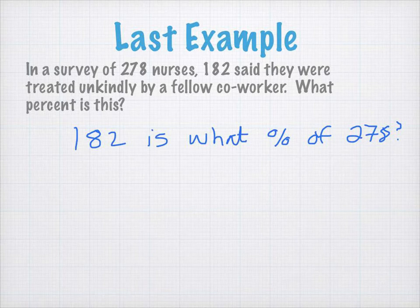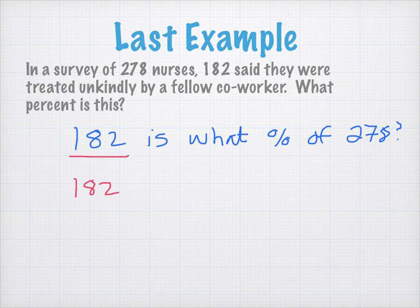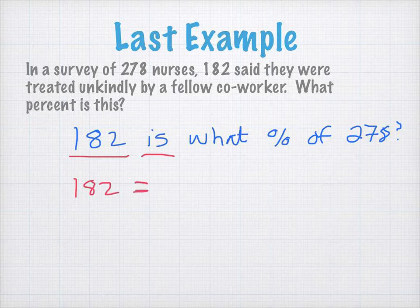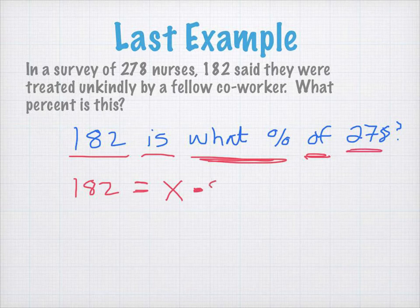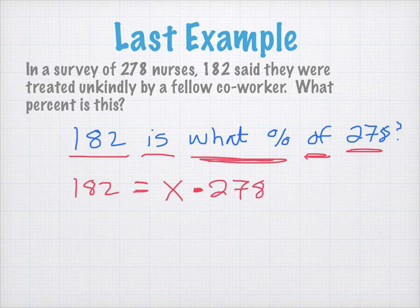Now, if I take this and rewrite this in terms of an algebraic statement, 182, well, that's just 182, is, would be equal to, what percent we don't know. So, I don't know what this next part is. So, I'll write an X. Of, we use multiplication, that's a multiplication sign there, 278. So, in this example, I rewrote it in a brief question. I am now going to, after rewriting it in terms of its algebraic components, solve for X.